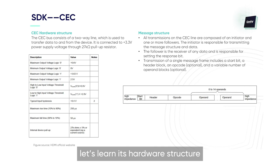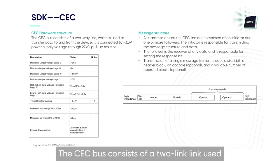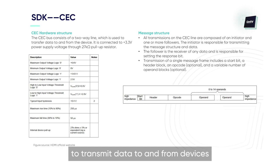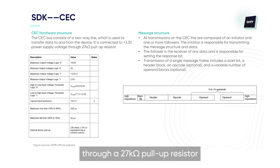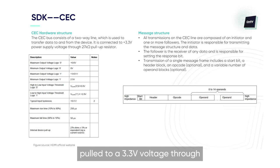Next, let's learn the hardware structure of CEC. The CEC bus consists of a two-link connection used to transmit data to and from devices. It is connected to a 3.3 V supply voltage through a 27K ohm pull-up resistor. When designing the hardware, the CEC line needs to be pulled to 3.3 V through a 27K ohm pull-up resistor.